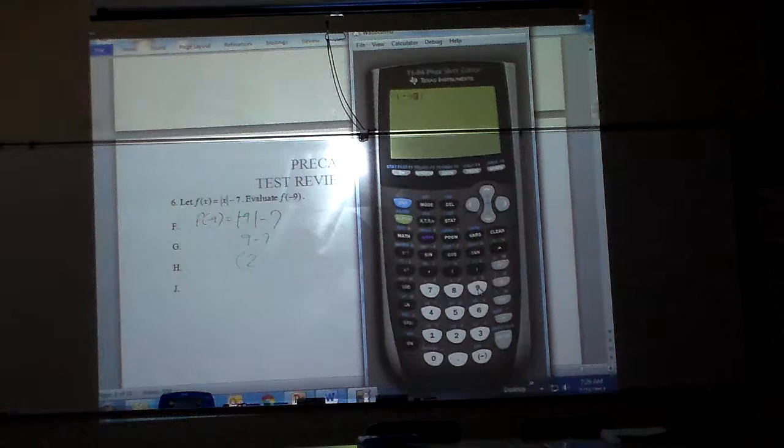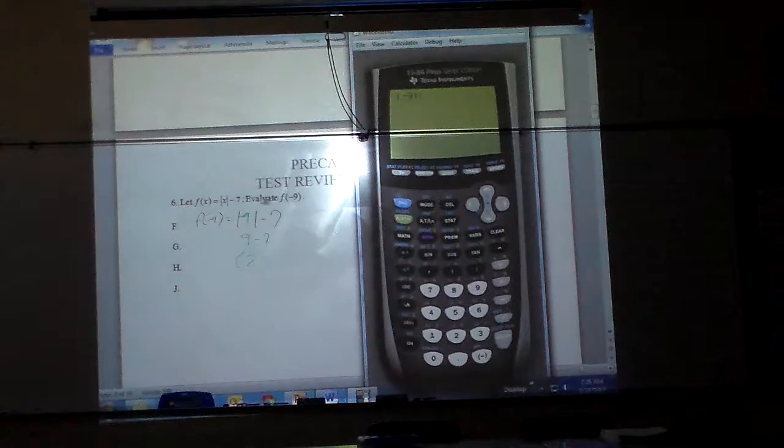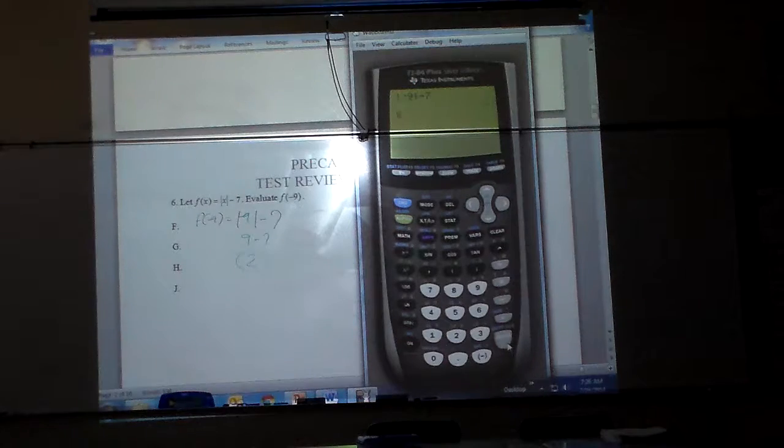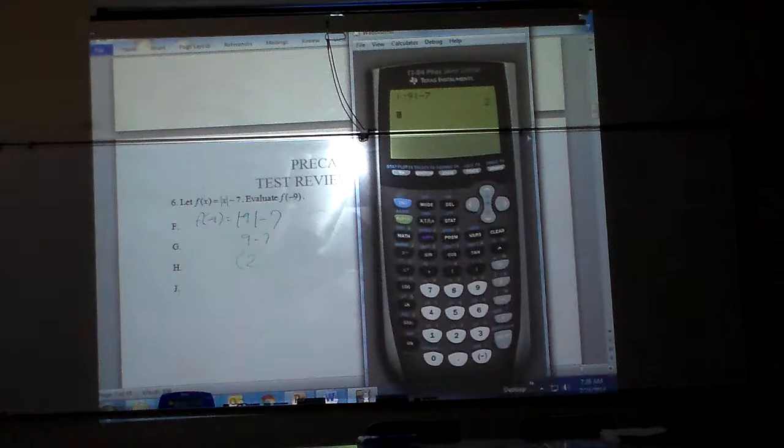And I'm going to put negative 9. Now I have to arrow out, and it's a minus 7. And hit enter, and I've also got that that way right there.